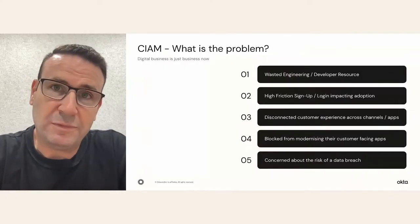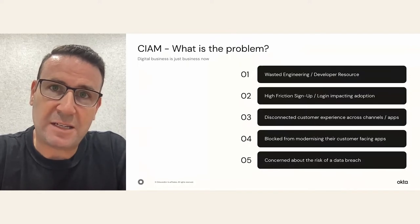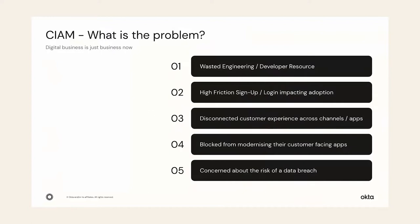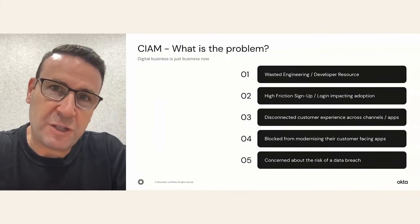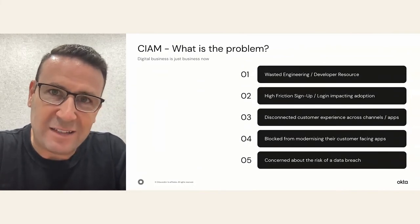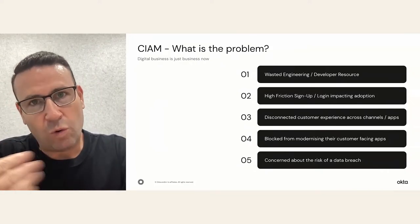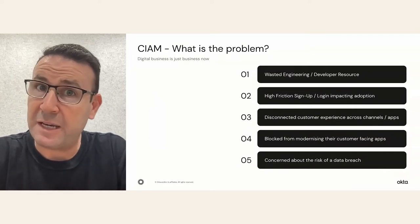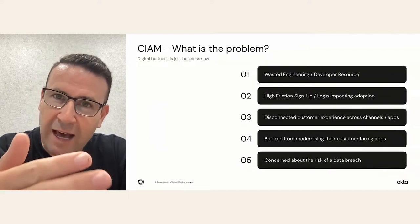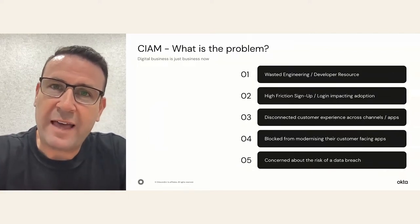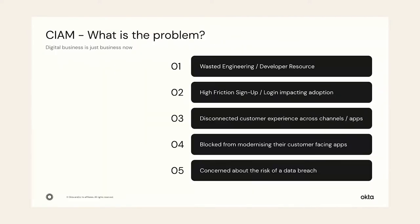So what's the problem that customer identity access management looks to solve? The first problem is really wasted energy, resources, and time building, maintaining, and enhancing your own identity service for your customer-facing apps — spending time on maintaining this rather than innovating in your core. The second challenge is that this is the front door to your customer-facing application, be it B2B or B2C, and if that door is hard to open, it can really impact your customer experience, ultimately affecting adoption, which translates into revenue, customer churn, or even cost to serve.